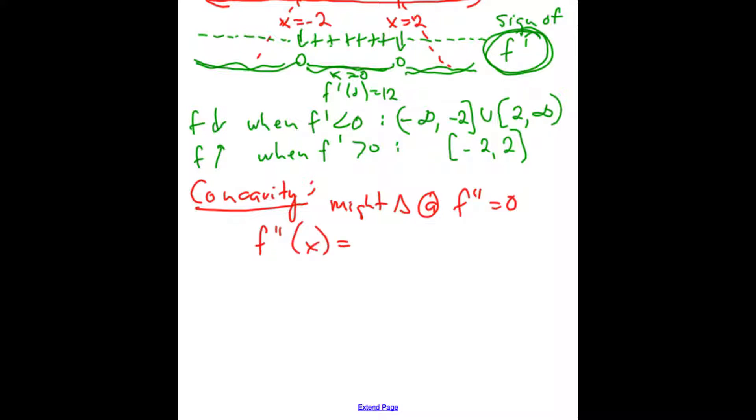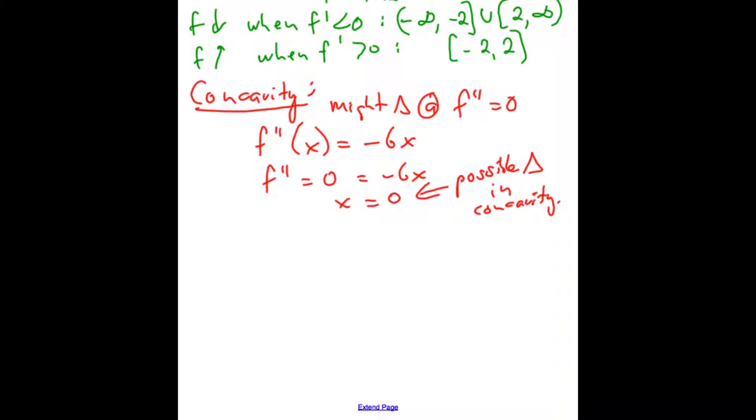So we need to look at the second derivative of the function. Which if I look back to the top, the second derivative would be negative 6x. And the second derivative would be zero when x is equal to zero. So this is a possible change in concavity. If it is a point where concavity changes, we'll be calling it an inflection point. So does the second derivative change at x equals zero? So now we're going to look at the sign of the second derivative compared with the effect on the original function.